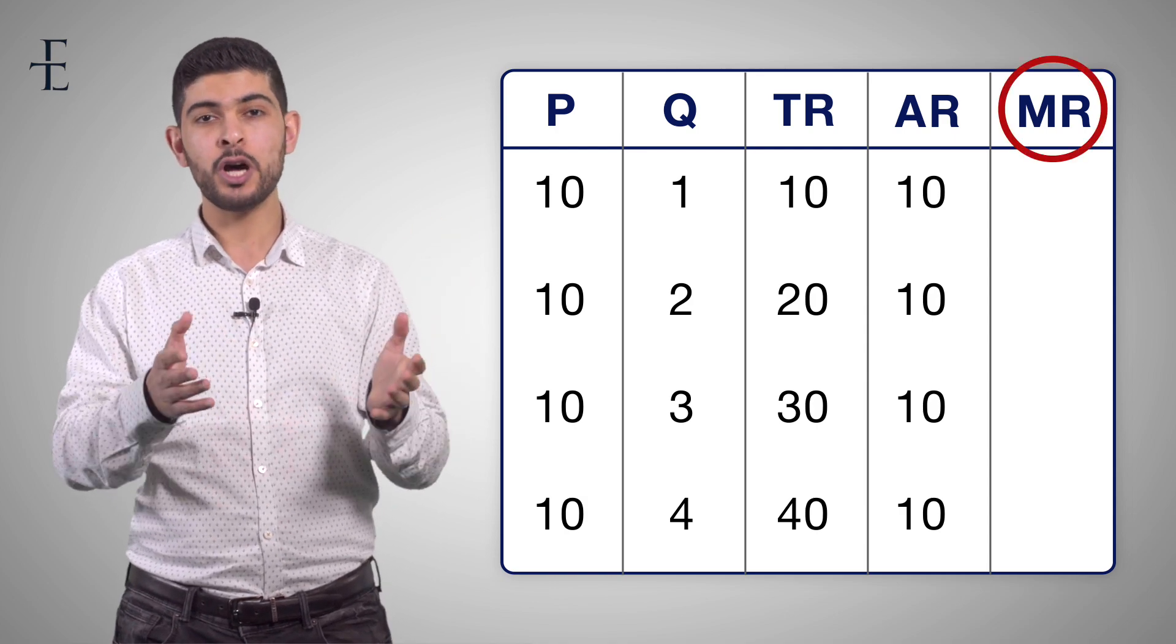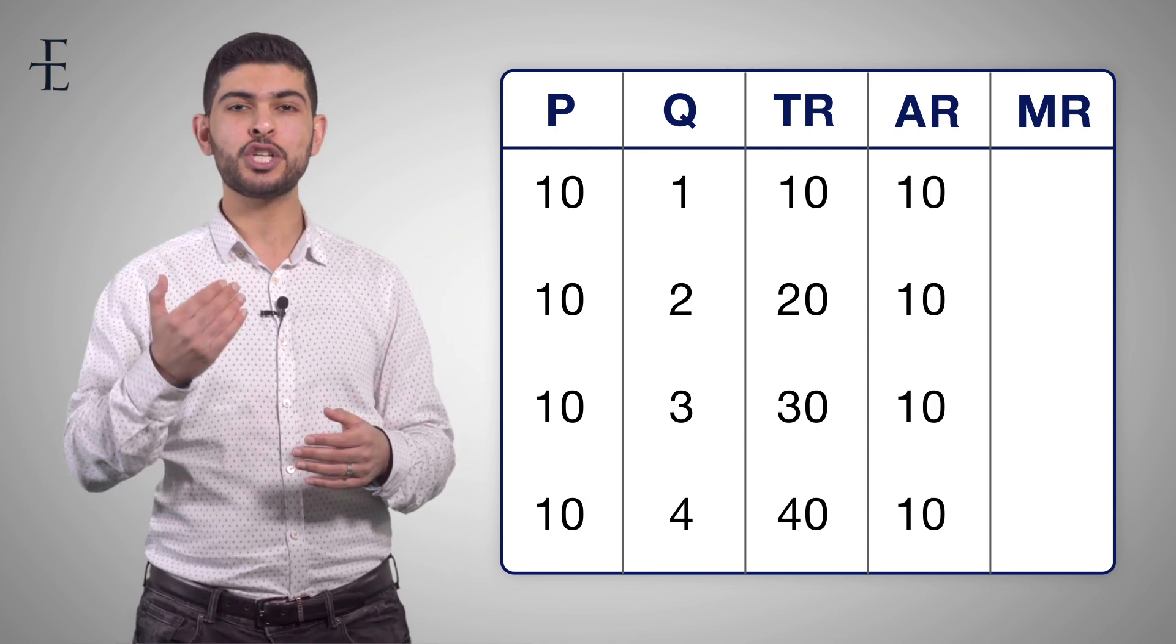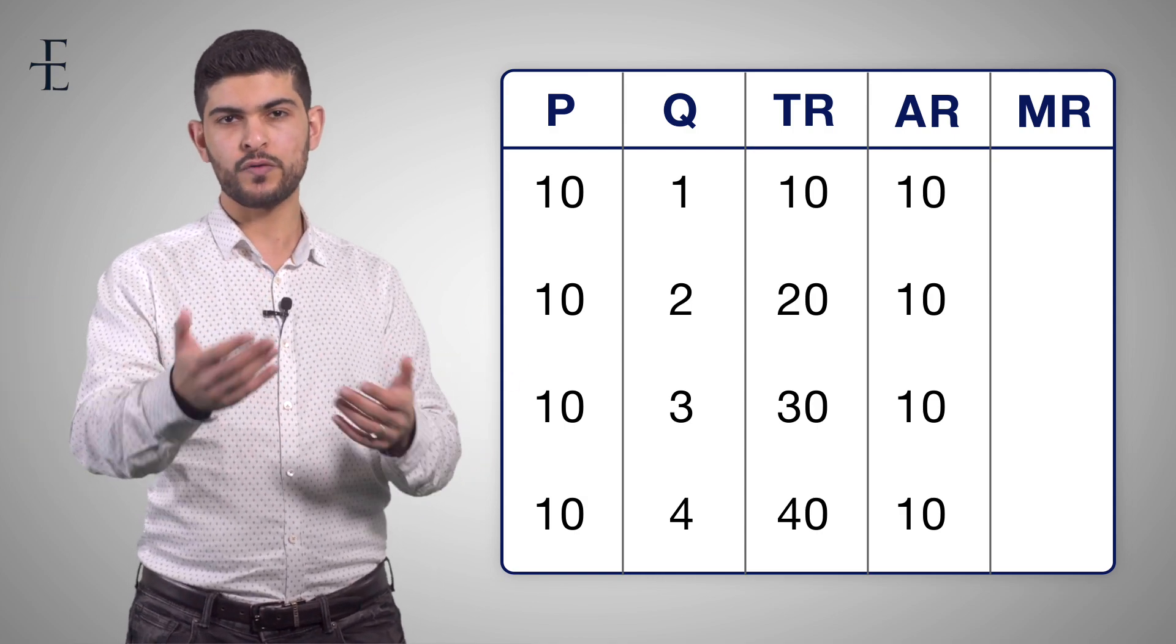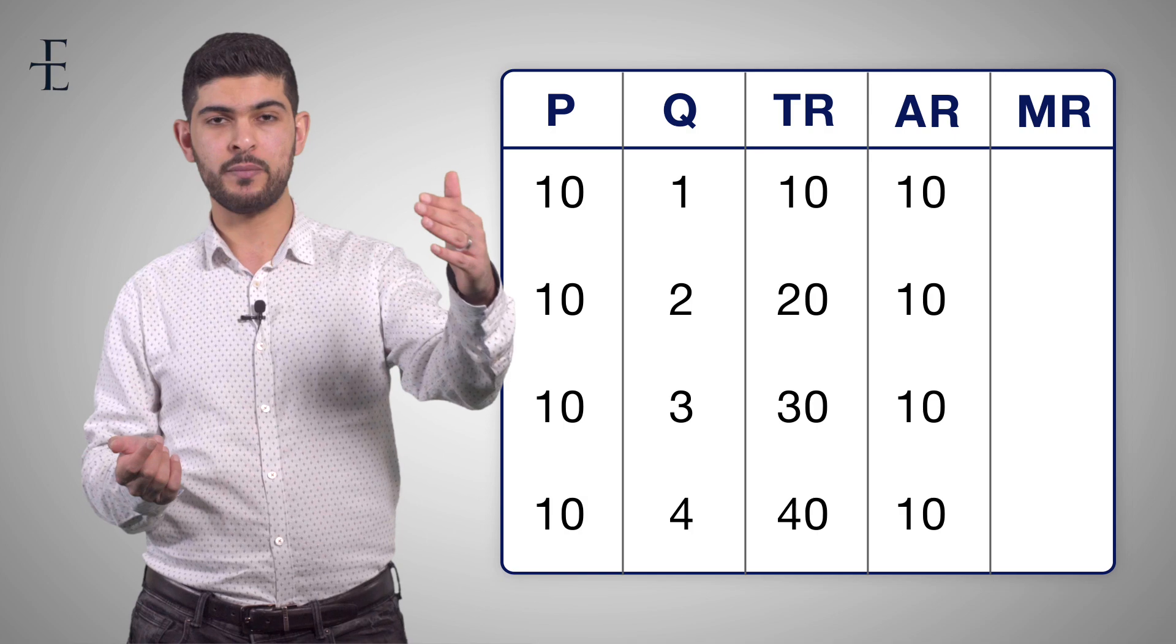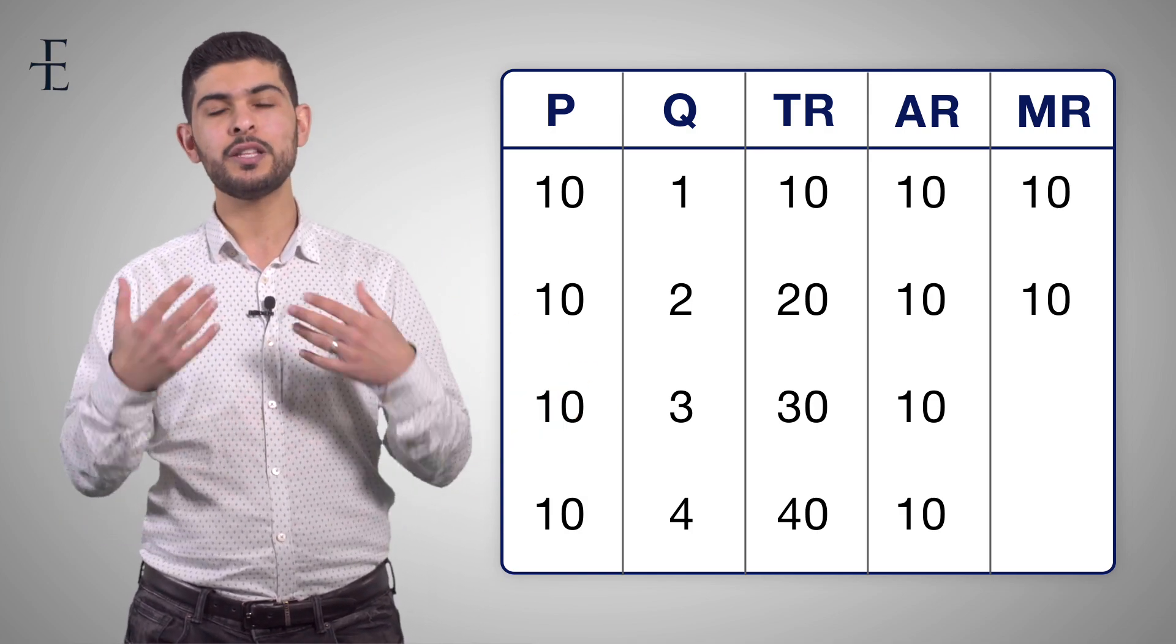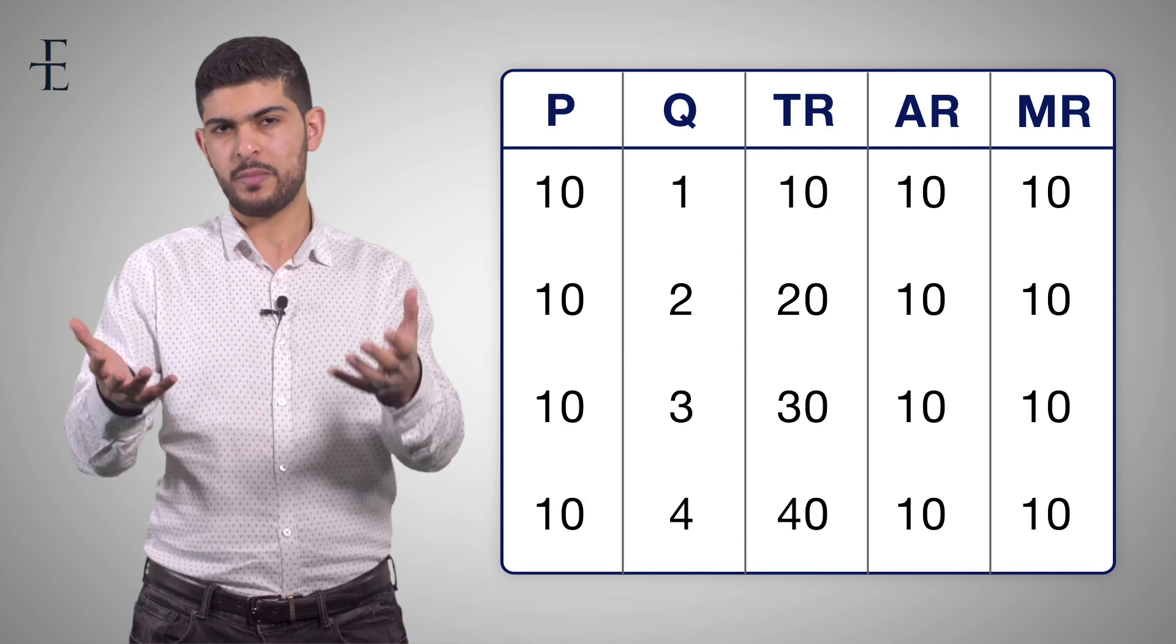Let's fill out marginal revenue. Marginal revenue, if you remember, is the additional revenue that you gain from an extra sale. Well, when I sold from 1 unit to 2 units, my revenue went up from 10 to 20. 10. From 2 to 3, it went up by 10. And so on and so forth. And of course, that should make sense.